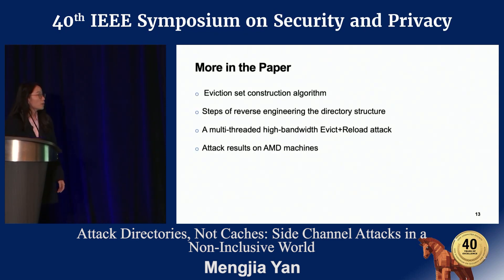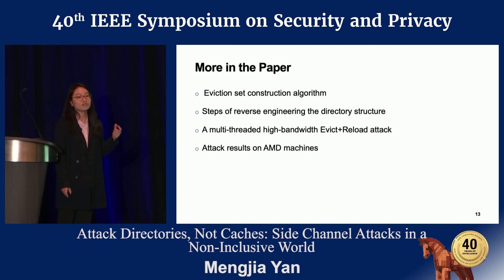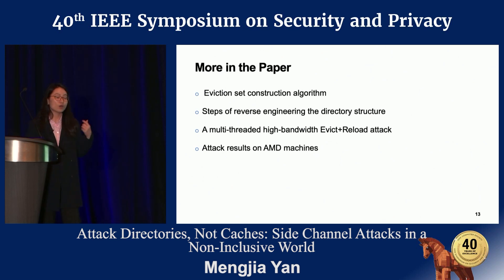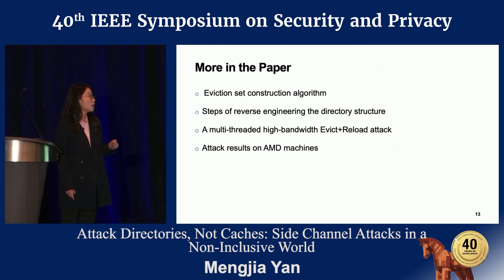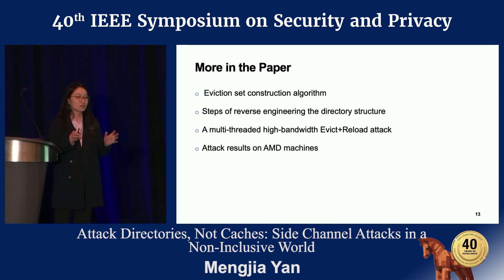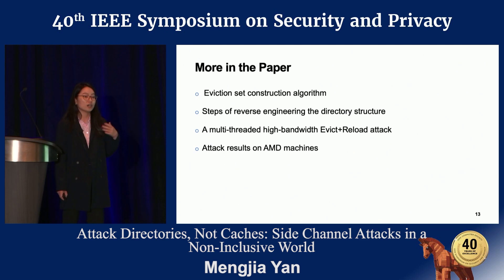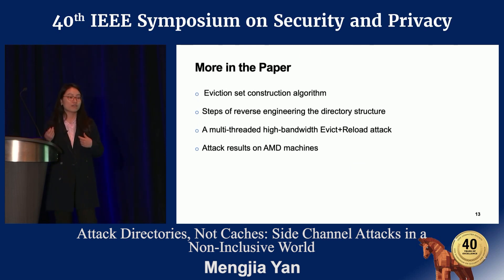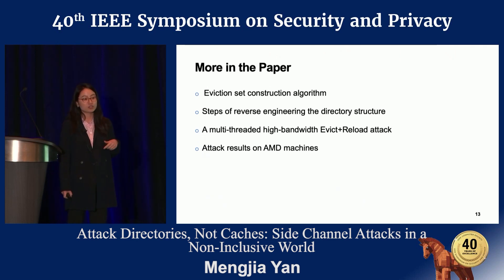There are many more interesting things in the paper. The old eviction set construction algorithm does not work for non-inclusive cache hierarchies, so we proposed a new version. We also provide detailed documentation of how we reverse-engineered the directory structure, all its parameters, configurations, and special operations. In addition to prime+probe, we designed a multi-threaded high-bandwidth flush+reload attack, which is slightly different because the directory handles shared cache lines differently from private ones. We also show results on AMD machines — our attack does not work on AMD because they have very few cores per die and likely do not use a directory, though their design is not scalable from a computer architecture perspective.